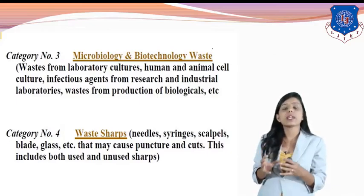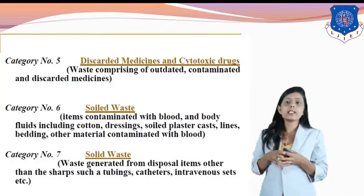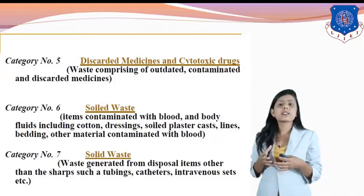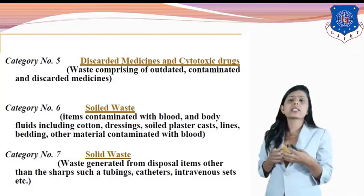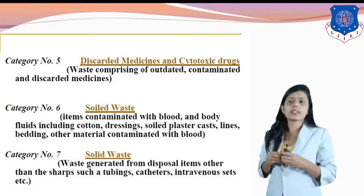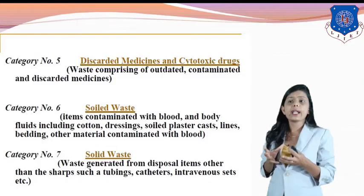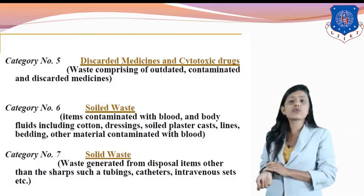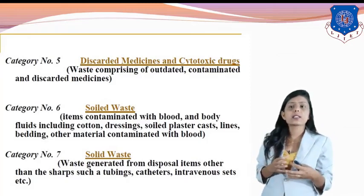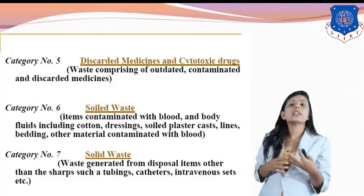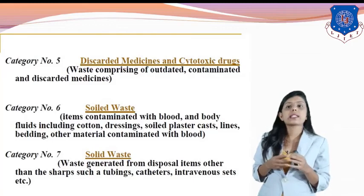Category five type of waste is discarded medicines and cytotoxic drugs — expired, contaminated, and discarded medicines fall in category five. Category six is soiled waste: items contaminated with blood and body fluids including cotton used to clean blood, soiled plaster casts, linen, bedding, and other material contaminated with blood such as bed sheets with blood stains.